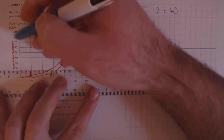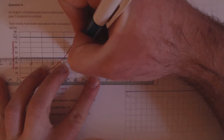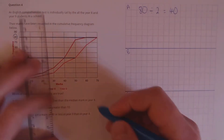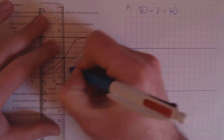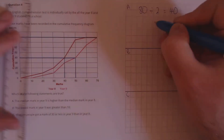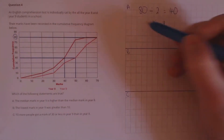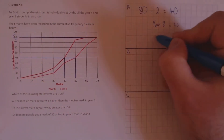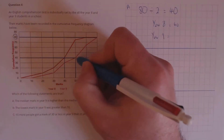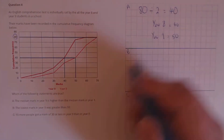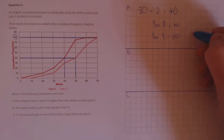So we go over to the cumulative frequency at 40 and draw a line across intersecting both curves, then draw a line down at the intersection for both of those. In year 8, the median mark was 40, and for year 9, 50 is the median mark. So the median mark in year 9 is higher than the median mark in year 8 — true.